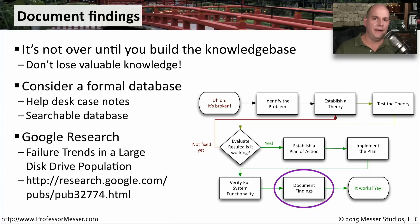If you want a good example of how documentation could help you, you should look at this document from Google Research. This is failure trends in a large disk drive population. Google documented every time a hard drive failed, the circumstances around that hard drive, how long the hard drive had been installed, and many other characteristics. And from that, they were able to make a determination and a prediction on when drives might fail based on all of this documentation that they created.